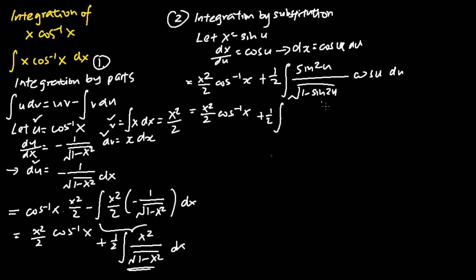The dx becomes cosine u du. For the denominator, it is square root of cosine square u because we apply the trigonometry identity that cosine square u equals 1 minus sine square u, and the square root of cosine square u is cosine u, and this is actually negated by the cosine u down here.